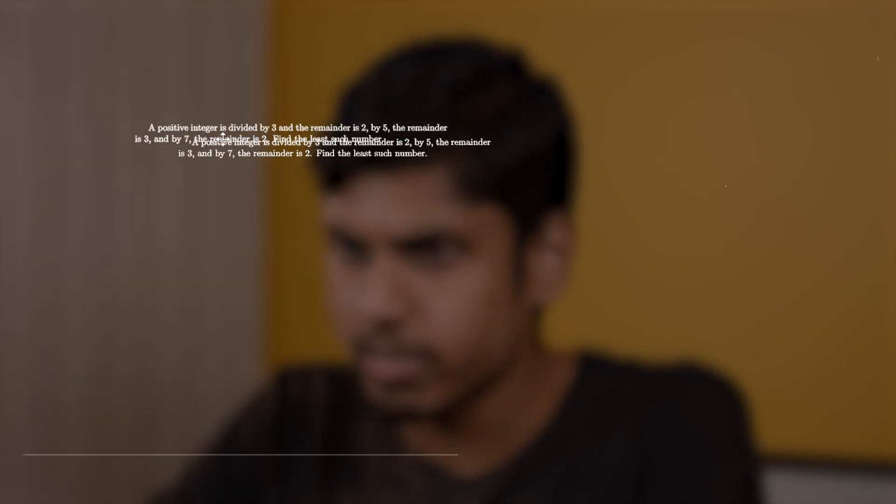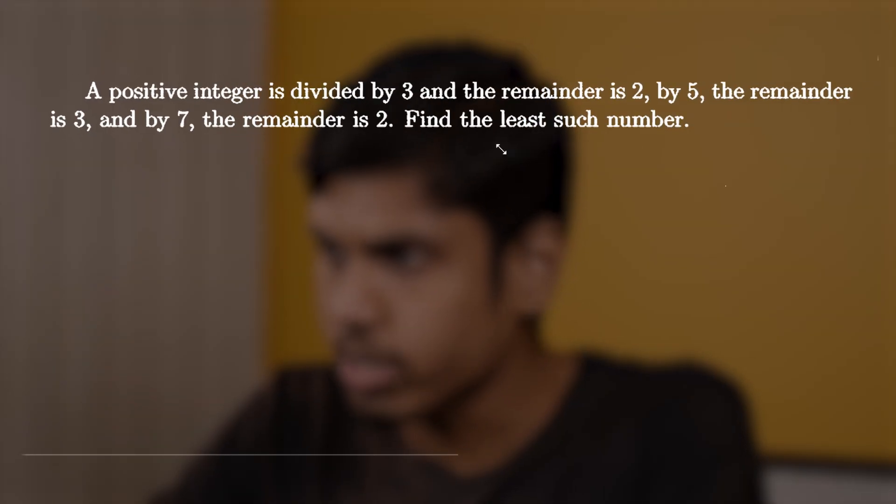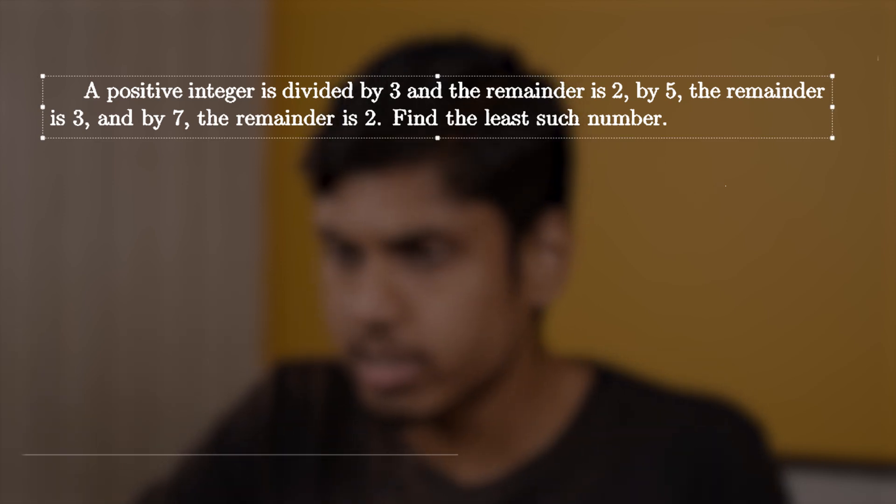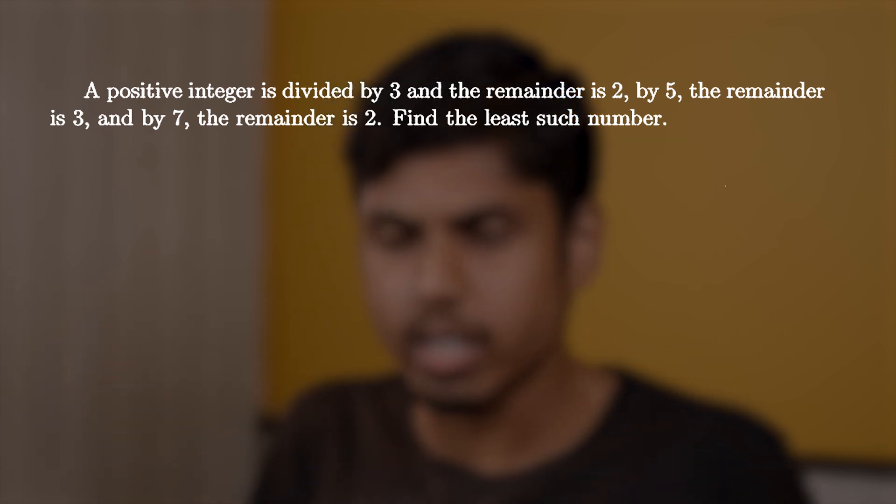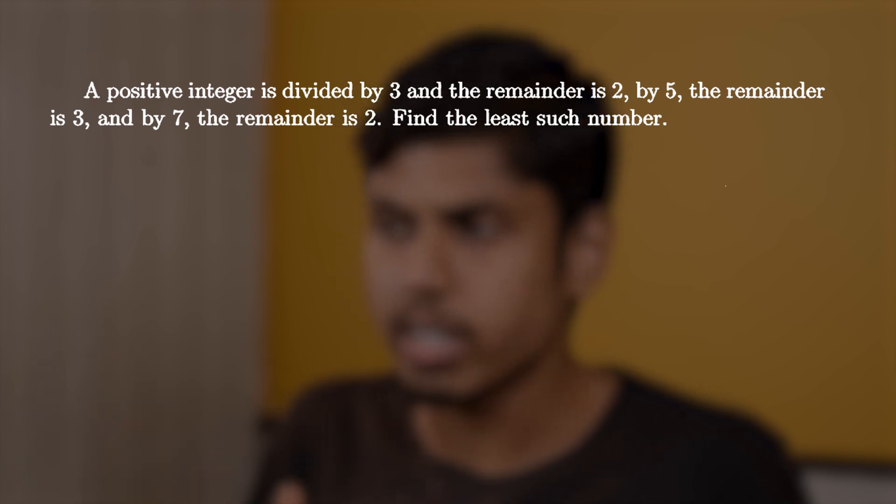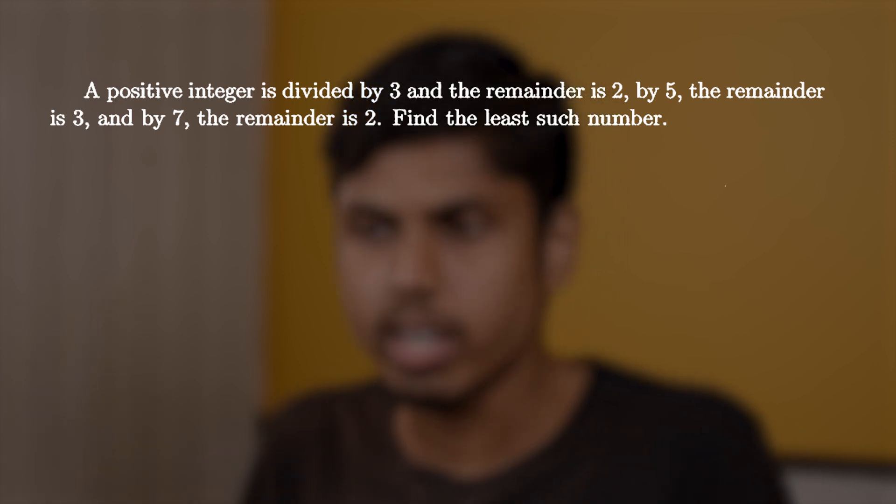Here is the question that we are going to solve before understanding the theorem. So first, it is given that a positive integer is divided by 3 and leaves a remainder of 2. It is divided by 5 and leaves a remainder of 3, and divided by 7 and leaves a remainder of 2.